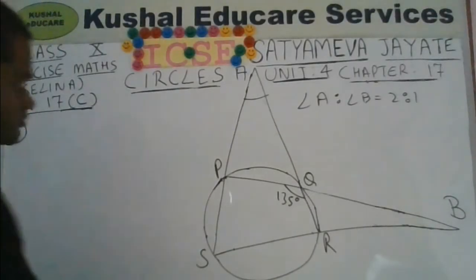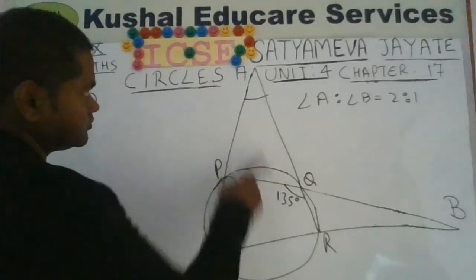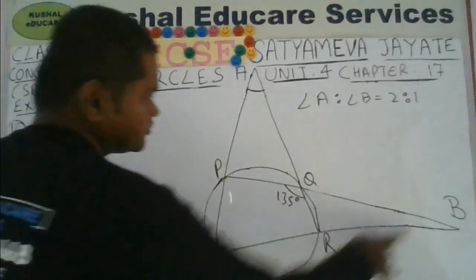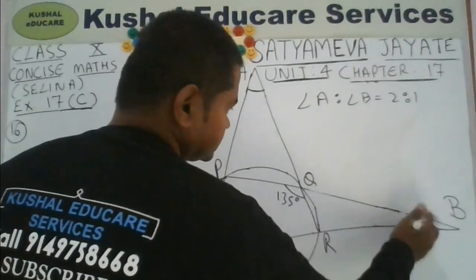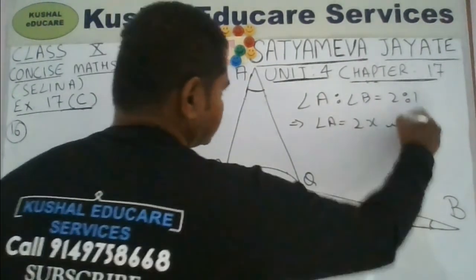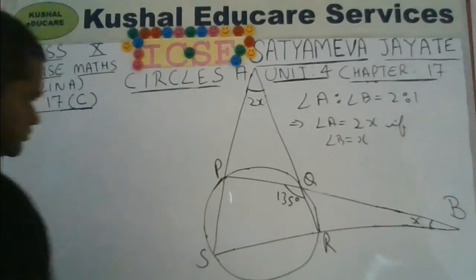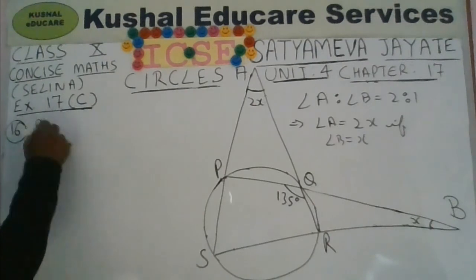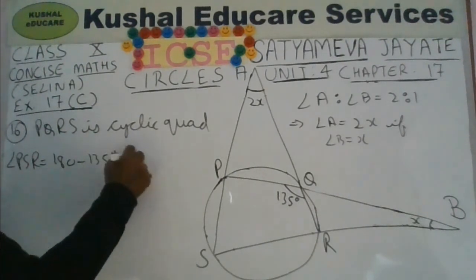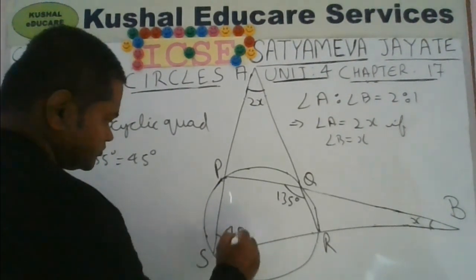In this figure PQRS is a cyclic quadrilateral with one angle known as 135 degrees. The ratio of angle A to angle B is 2 to 1, so let angle B equal x degrees, meaning angle A will be 2x degrees. PQRS being a cyclic quadrilateral means angle PQR plus angle PSR equals 180 degrees. Using this, angle PSR equals 180 minus 135 degrees, that is 45 degrees.